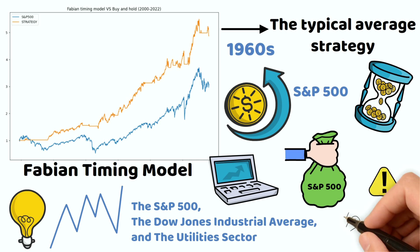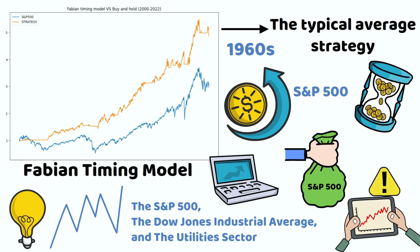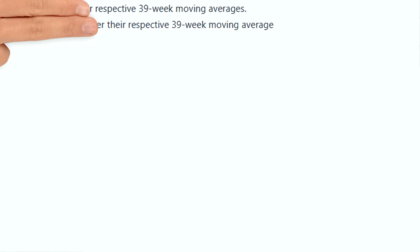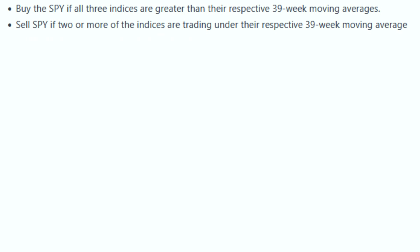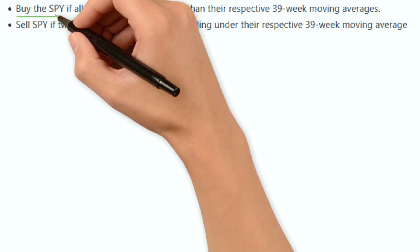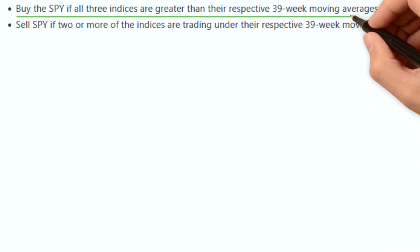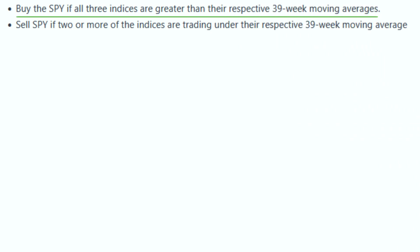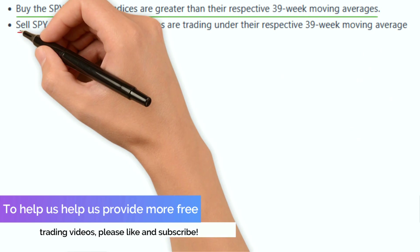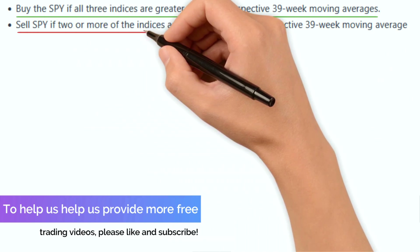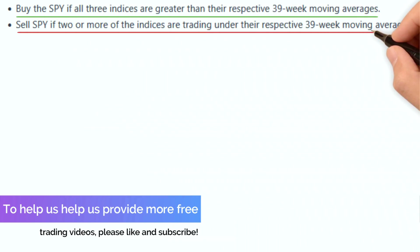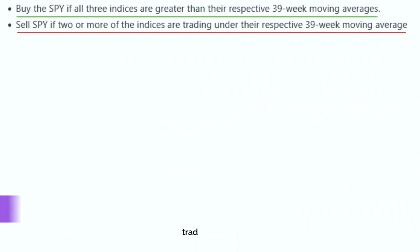When two or more indices start to buck the trend, the model identifies a sell signal. The trading rules for the Fabian market timing model are: a buy signal is generated when the S&P 500, Dow Jones Industrials, and the utilities sector are all above their 39-week moving averages. A sell signal is sent when two or more of the indices fall below their 39-week moving average.